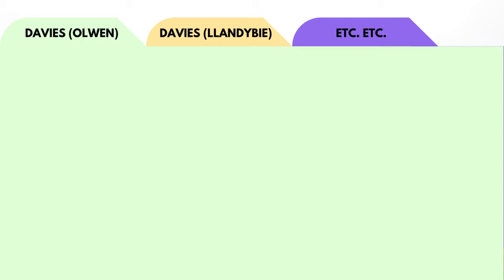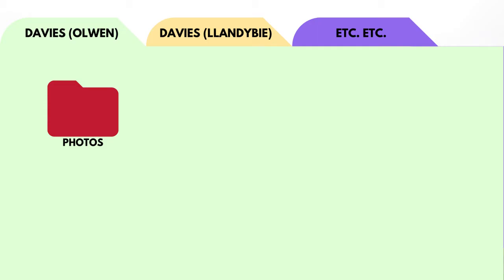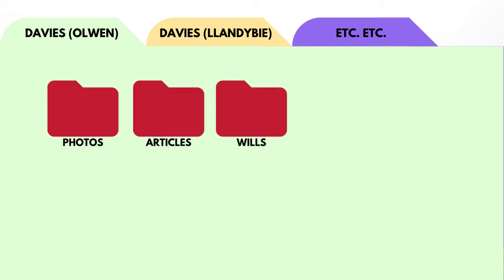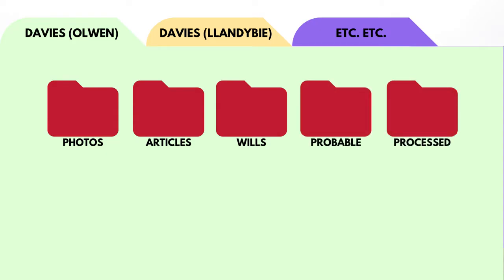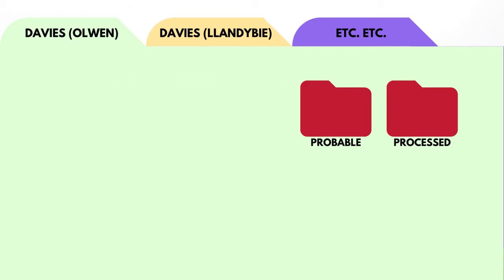Sometimes I just want to search and collect, and then leave the family tree part till later. Once I start going through these files, I start filtering them into subfolders. What works best for me is having a subfolder for photographs, one for articles, one for wills, one for probable, and another for processed.